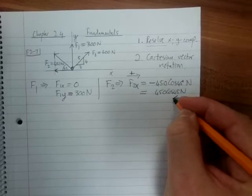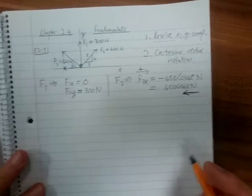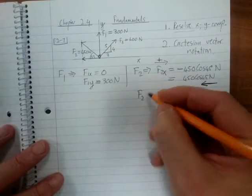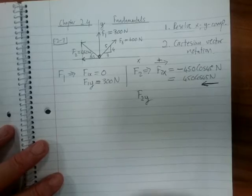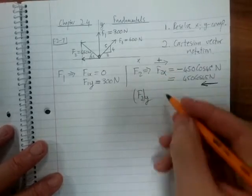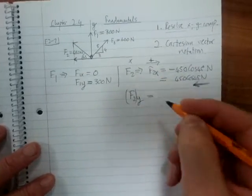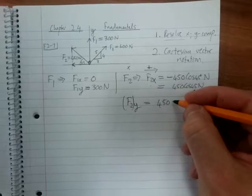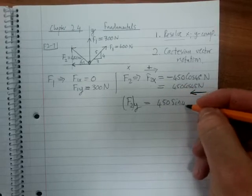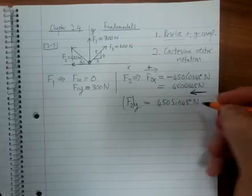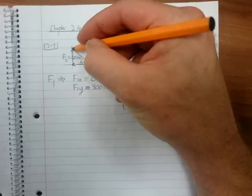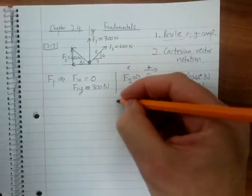And then you basically draw the arrow going to the left. Then F2 in the Y direction, we can write it like that. It would be then 450 sine 45 Newton because we're looking at that component there.